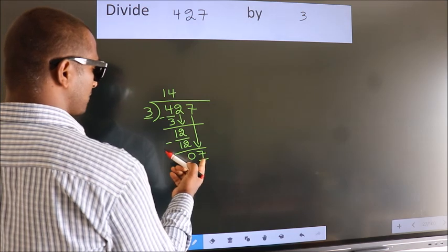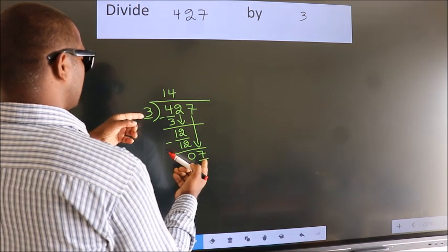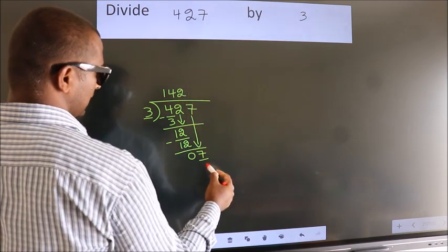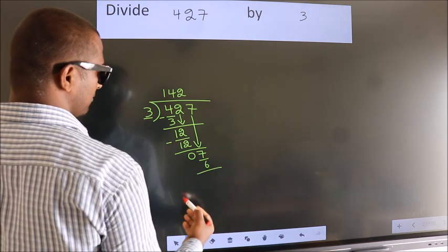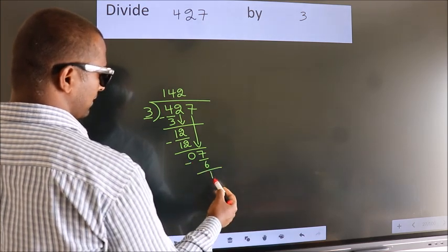A number close to 7 in 3 table is 3, 2s, 6. Now we subtract. We get 1.